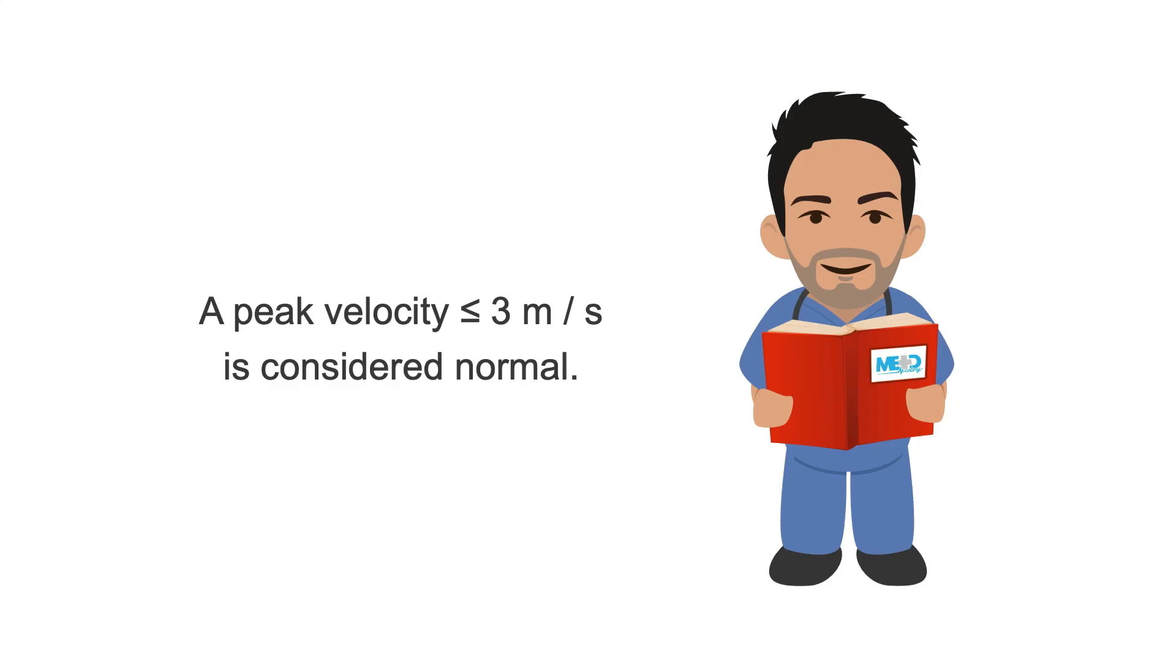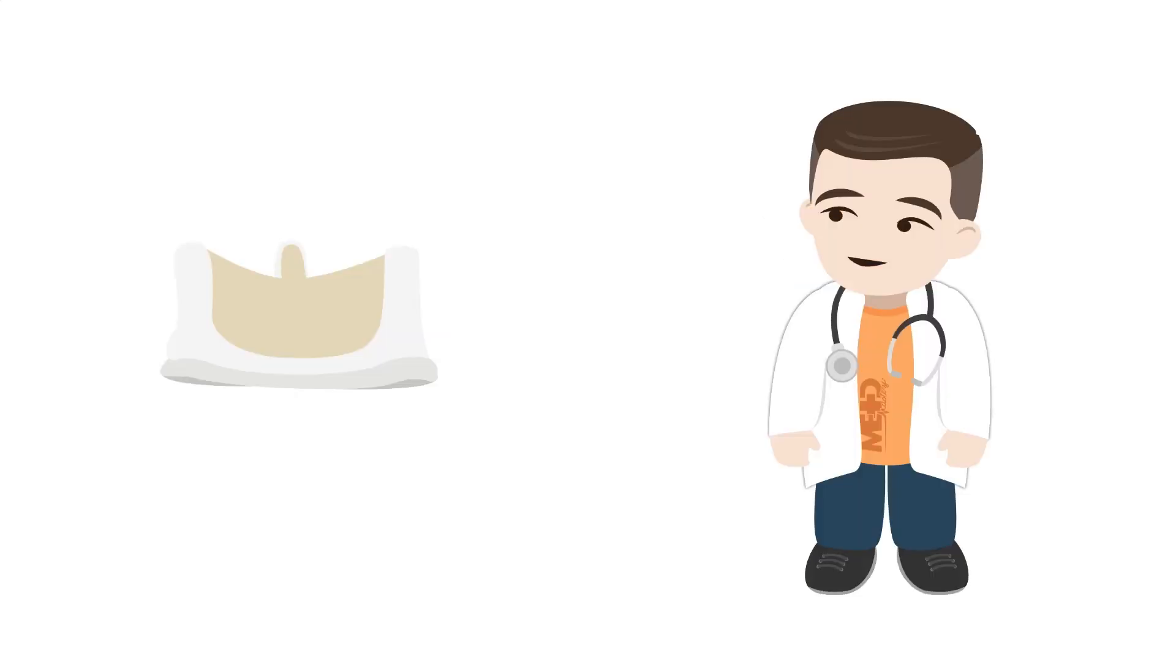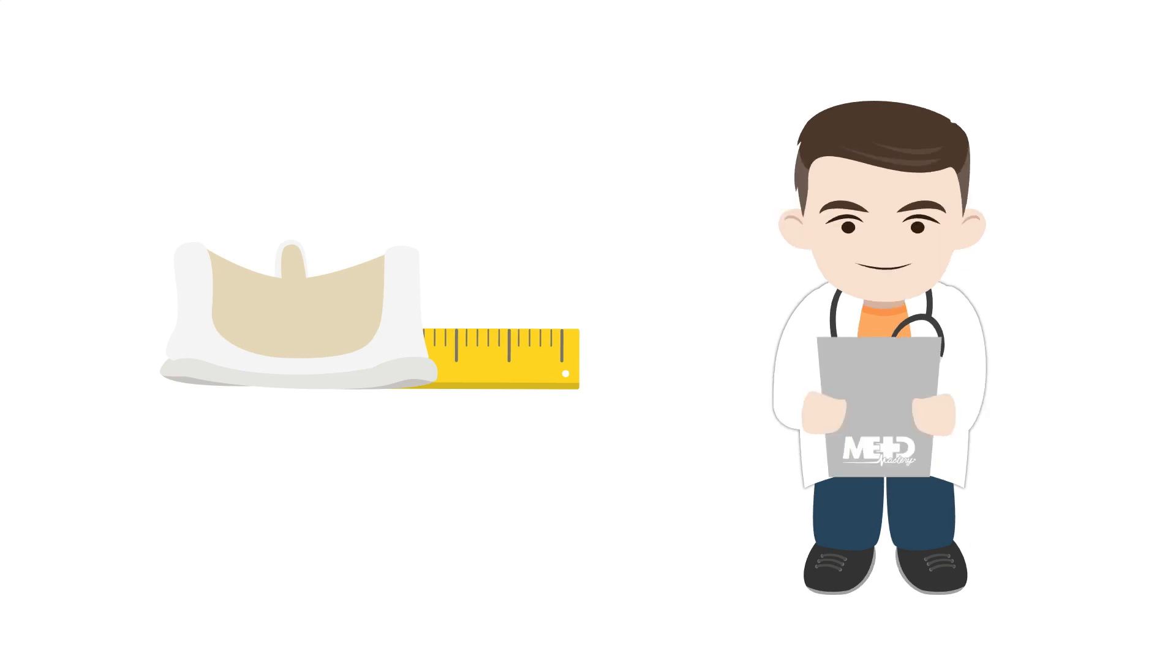Generally, a peak velocity less than or equal to 3 m per second is considered normal. To check whether the pressure gradient is within the normal range, the next step is to determine the model and the size of the prosthesis and check the reference values for this specific valve.